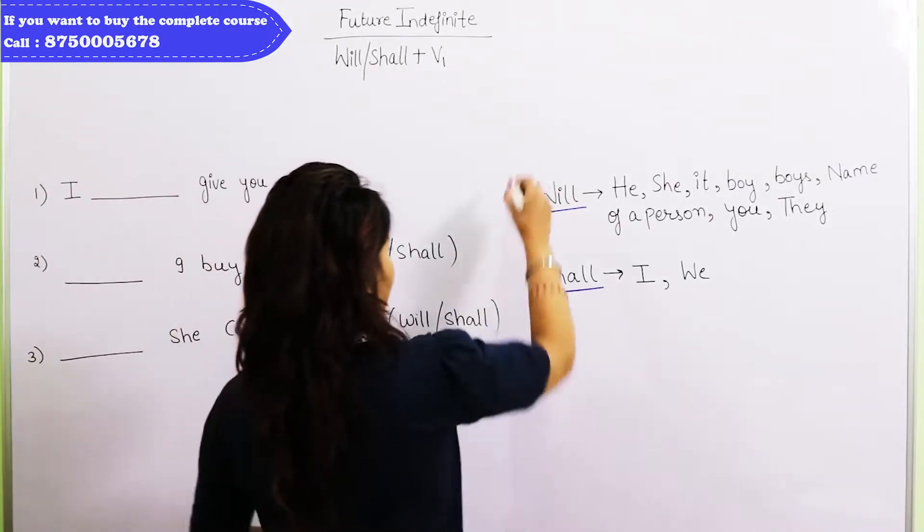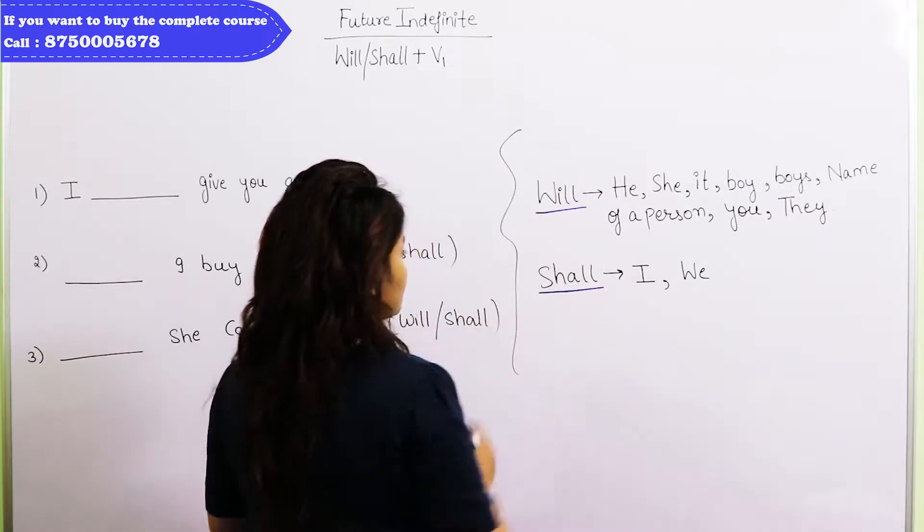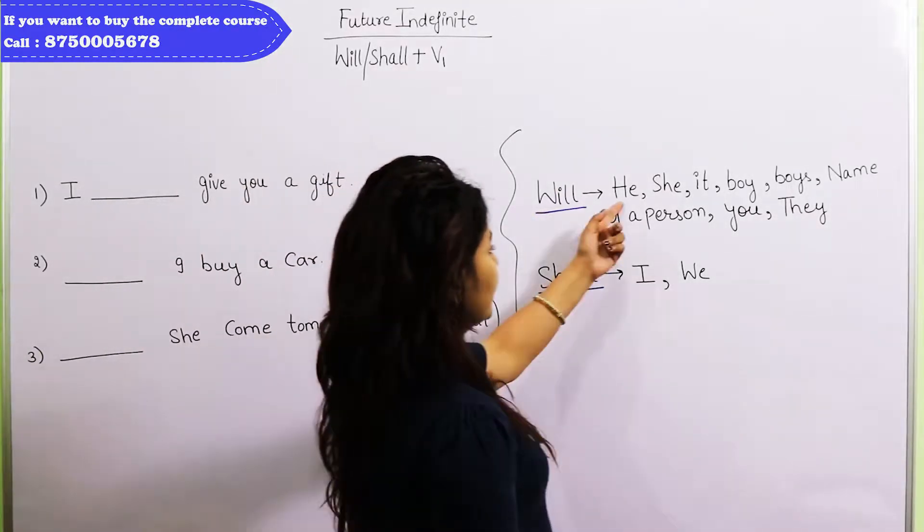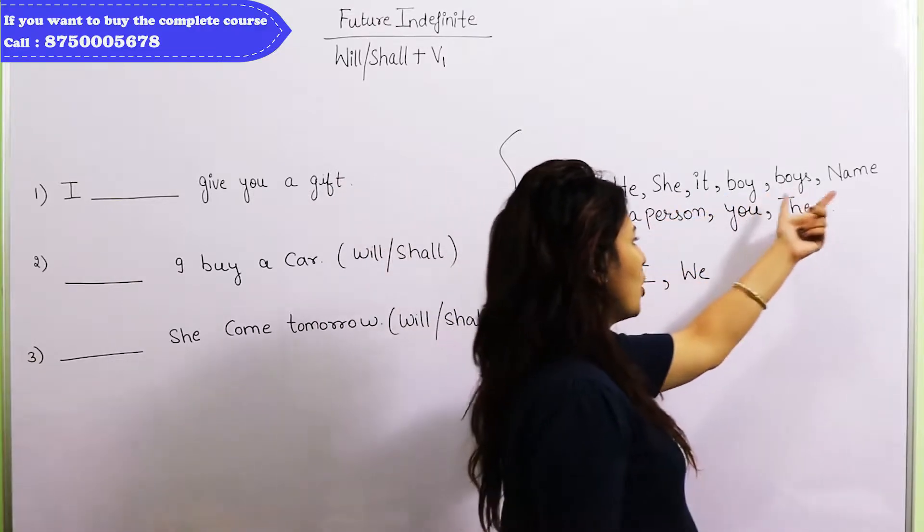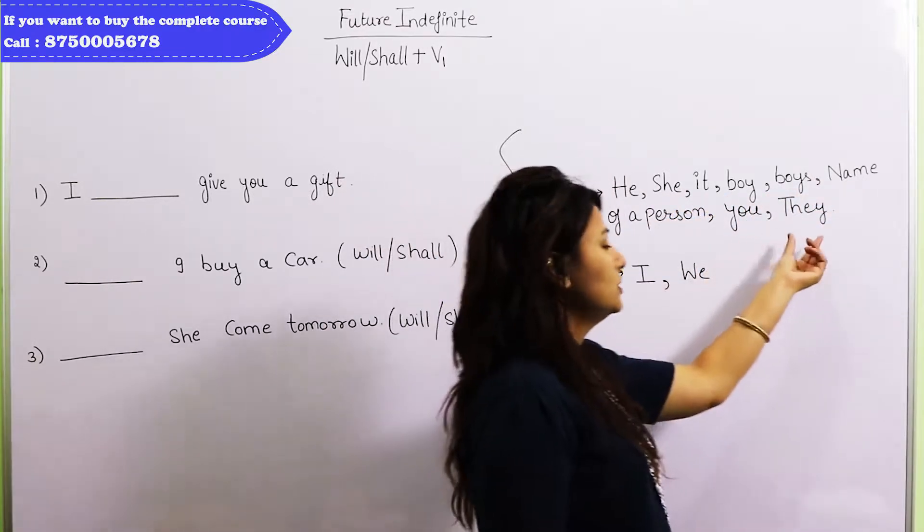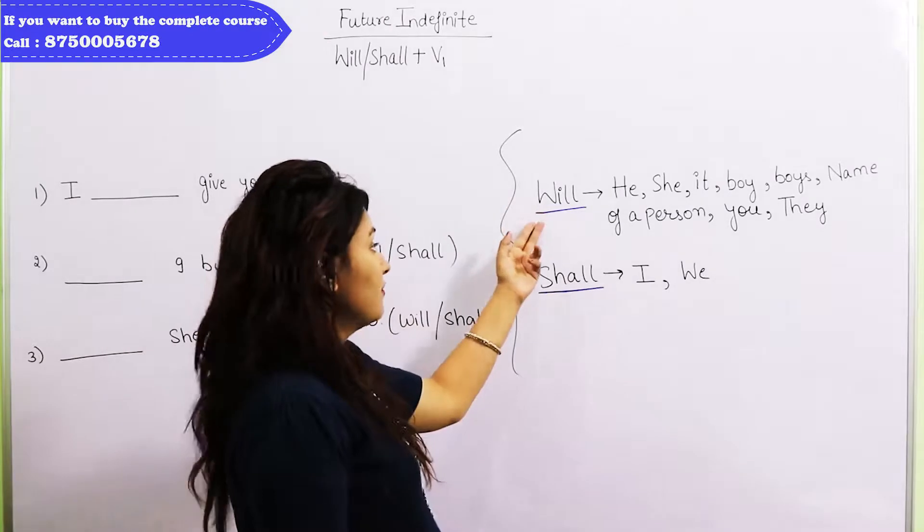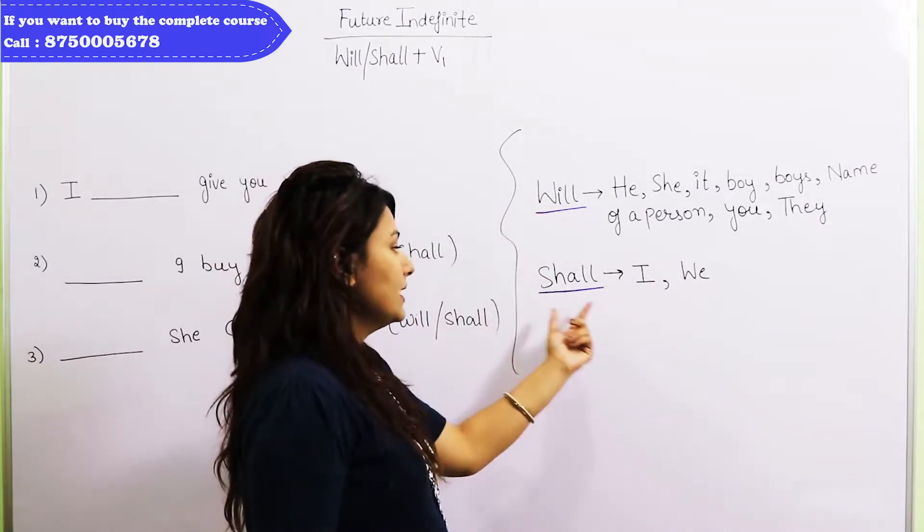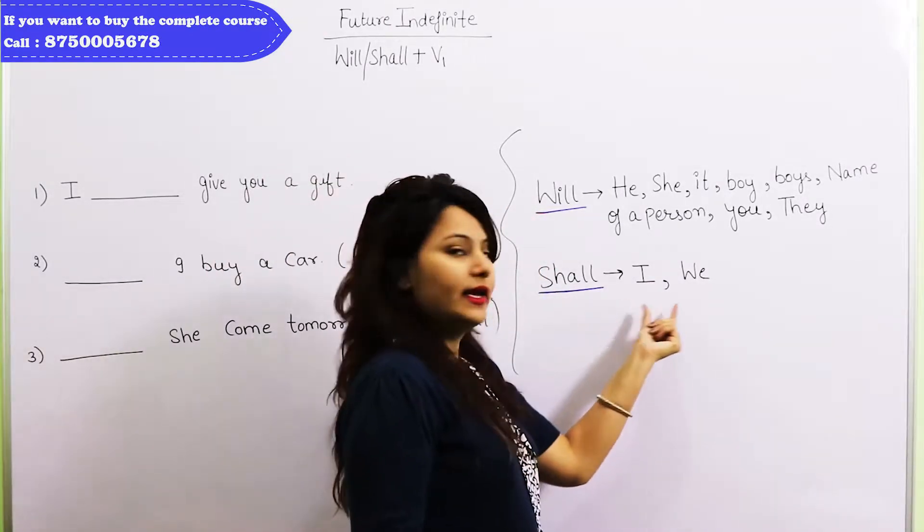Where will use will? He, she, it, boy, boys, you, they. They will use will. And shall, who will it be? I and we.